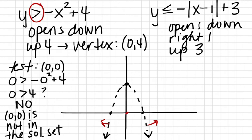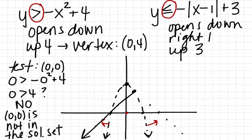Now for the absolute value graph: it's a v-shape shifted right 1 and up 3, with the vertex there, opening down. There's no stretch or compression, so the slopes of the two branches are +1 and -1. Because this inequality is less than or equal to, this will be a solid v — graphed with two solid portions rather than dotted. We'll then test to determine whether to shade outside or inside the v.